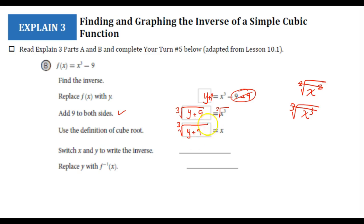The next thing I'll do is go ahead and switch around our x and y. So that'd be y = ∛(x + 9). I'll then replace y back with the function inverse symbol because that's what we found here, the inverse of that original cubic function.